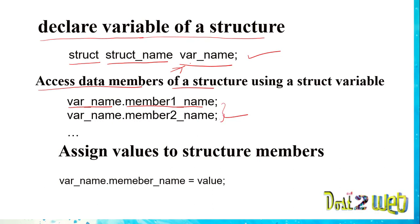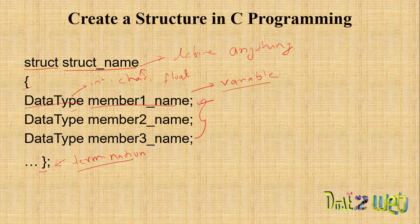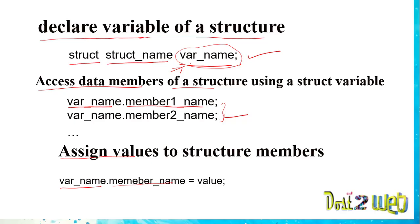To assign a value to a structure member, you write the variable name, then a dot, then the member name, followed by the equals symbol and the value you want to assign. This is the basic syntax for working with structures in a C program.